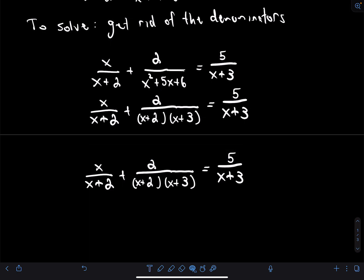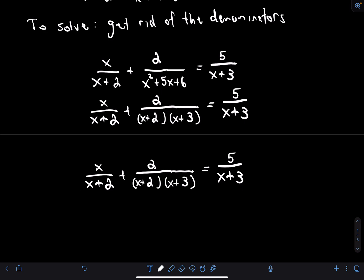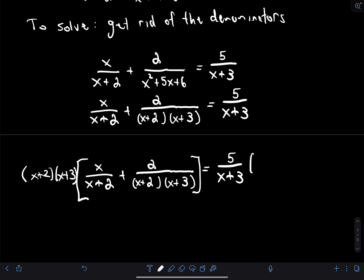Now we want to get rid of the denominators. I've got a denominator of (x+2), then a denominator of (x+2)(x+3), and another denominator of (x+3). We can multiply both sides of the equation by (x+2) and (x+3). If I distribute that on the left side, I'll do it on the right side as well, and that will get rid of the denominators of my fractions.